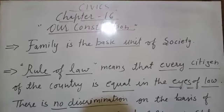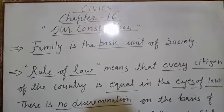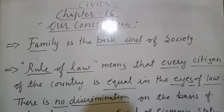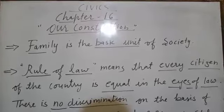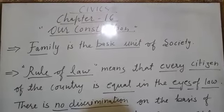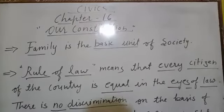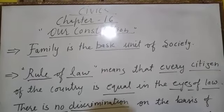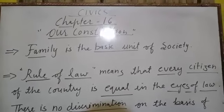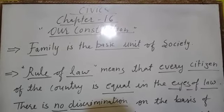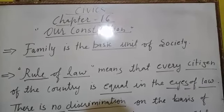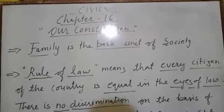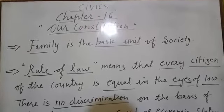Before we start the chapter, I want to tell you about the syllabus. As you know, the social science book of 8th class is divided into three parts. The first part is geography, the second part is history, and the third part is civics. We have completed the first three chapters of geography, that is chapter number 1, 2, and 3.